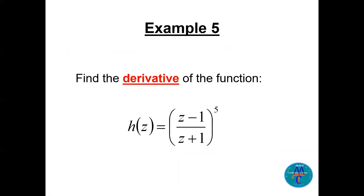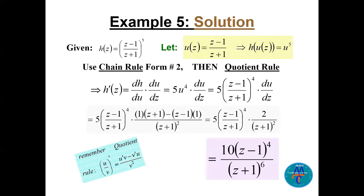Example 4: h(z) = ((z−1)/(z+1))^5. Find h prime. Let u(z) = (z−1)/(z+1) be the inside function, so h = u^5 where h is a function of u and u is a function of z.